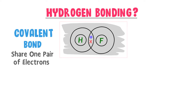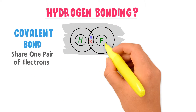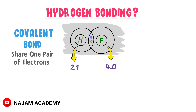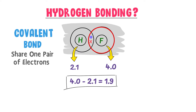In this molecule, fluorine is highly electronegative compared to hydrogen. The electronegativity of fluorine is 4.0 and the electronegativity of hydrogen is 2.1. The electronegativity difference of hydrogen fluoride is 1.9 — a very large difference. As a result, fluorine pulls the shared pair of electrons more towards itself, the electron cloud tilts towards fluorine, and a partial negative charge appears on fluorine while a partial positive charge appears on hydrogen.